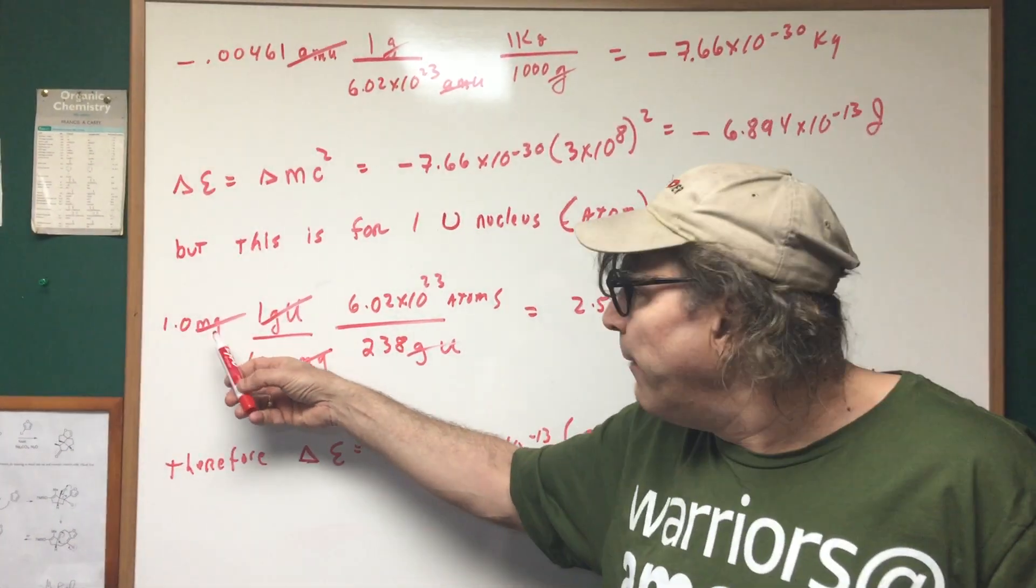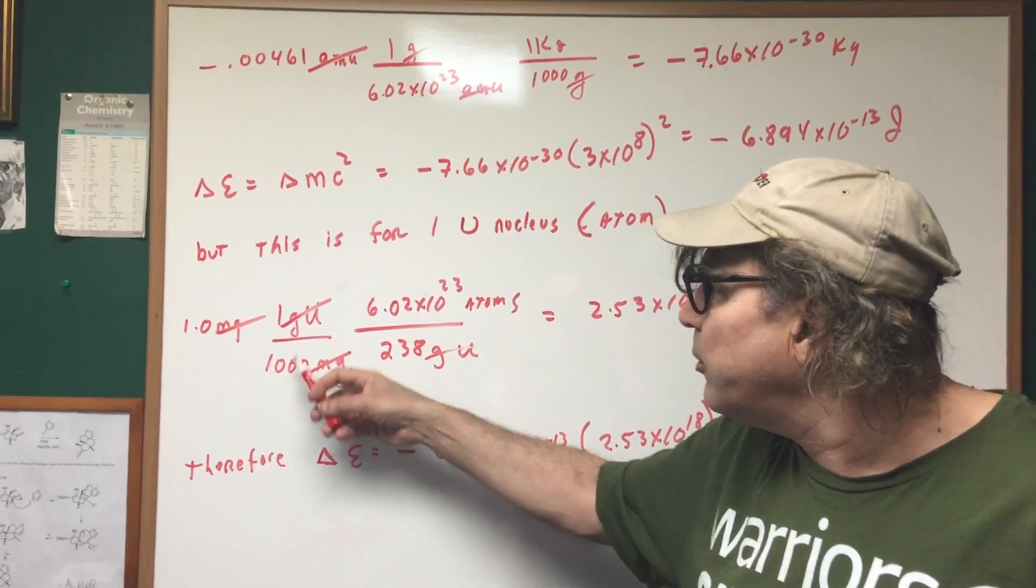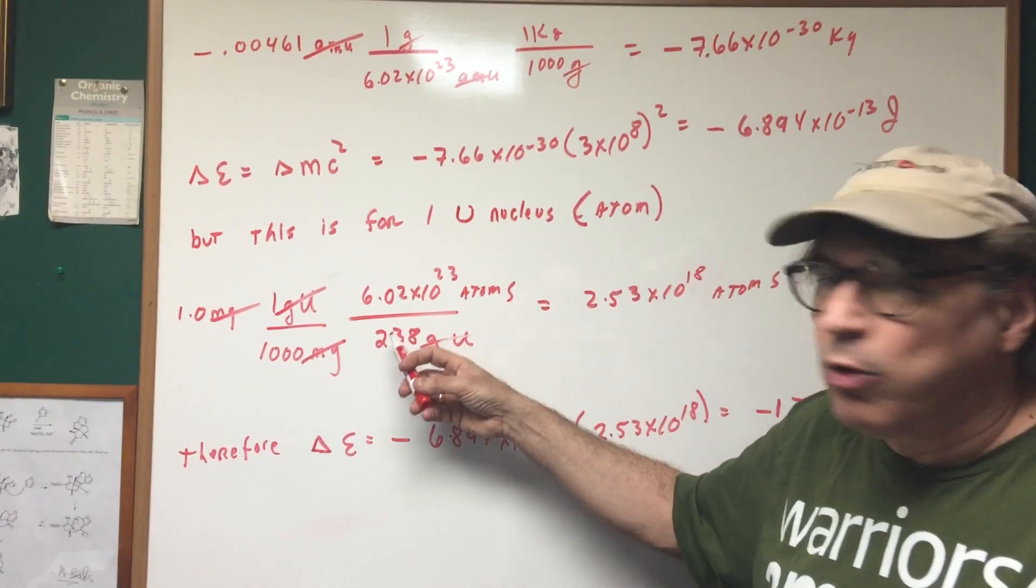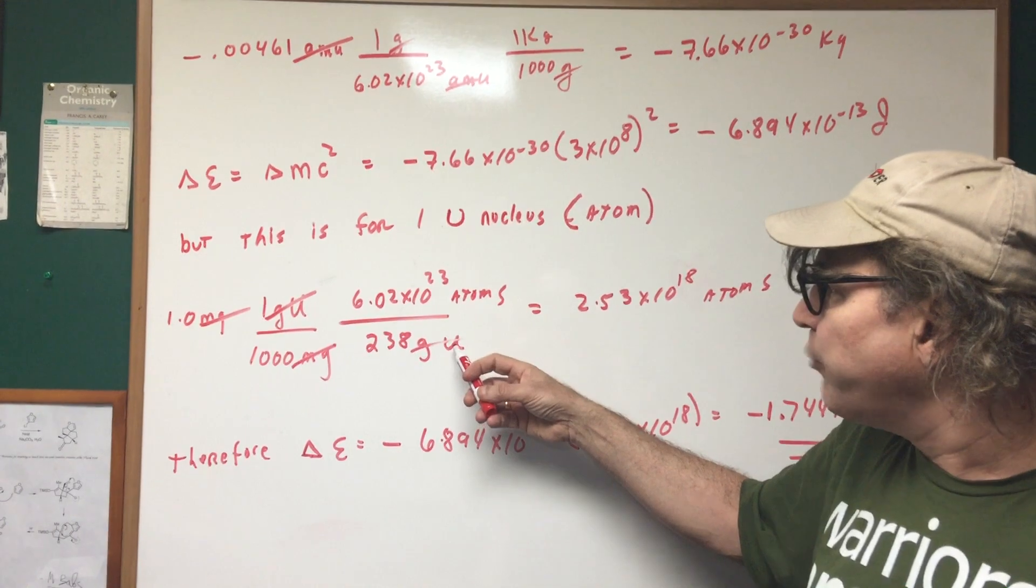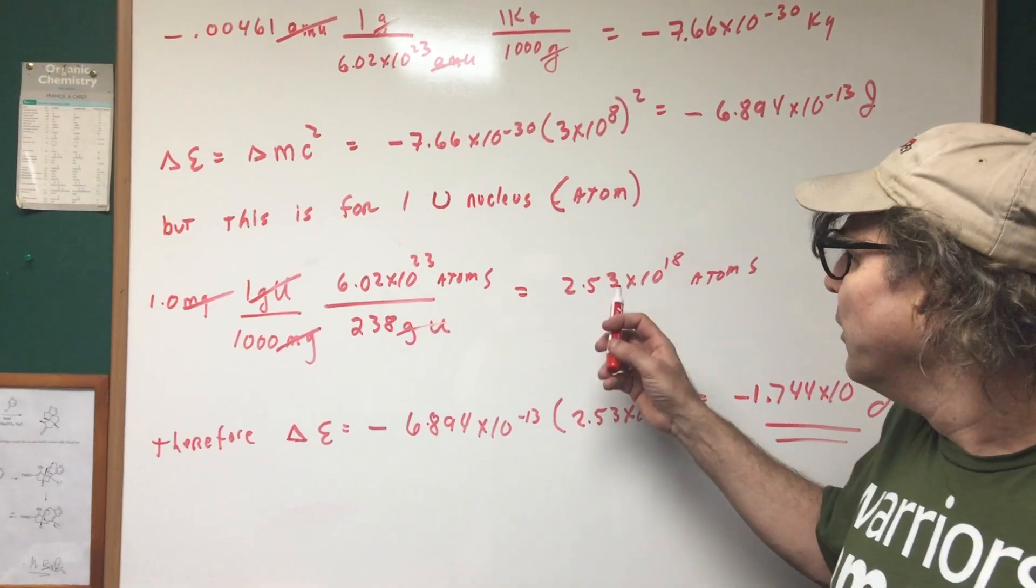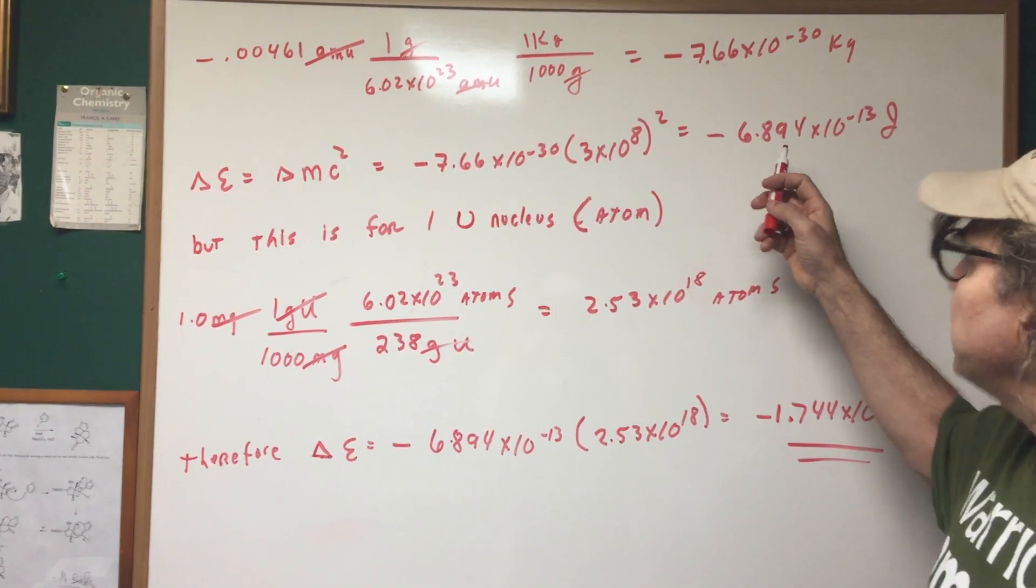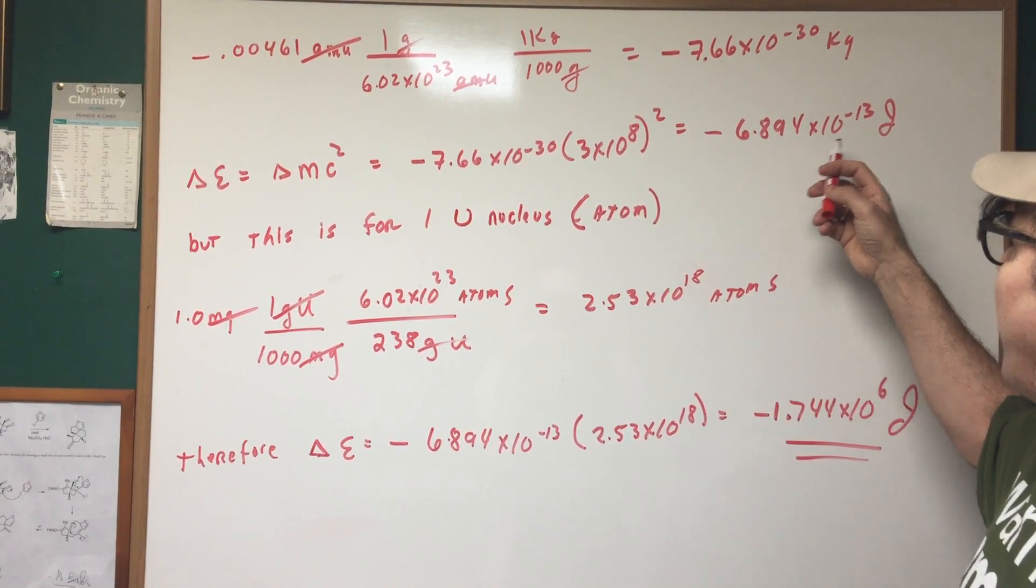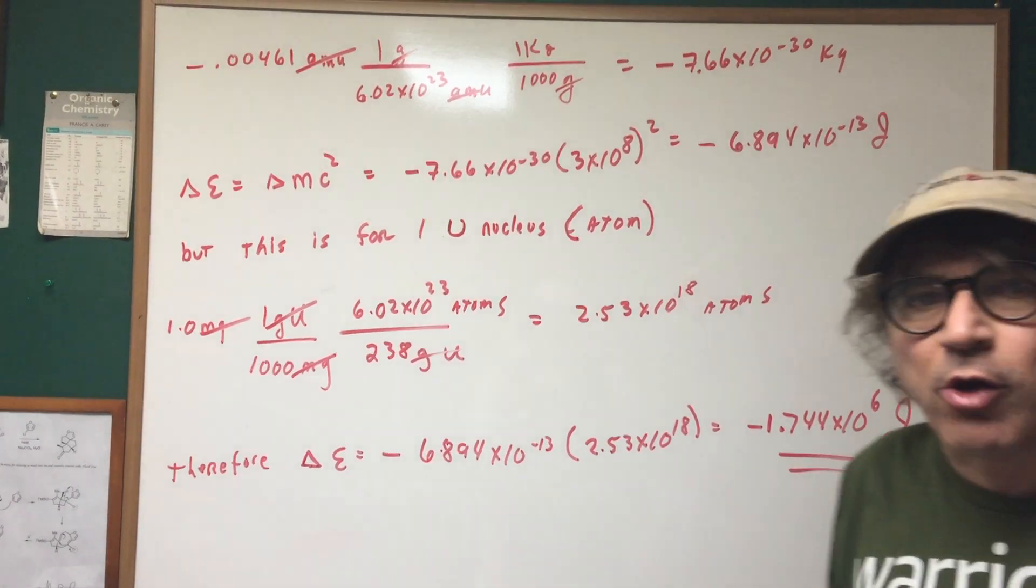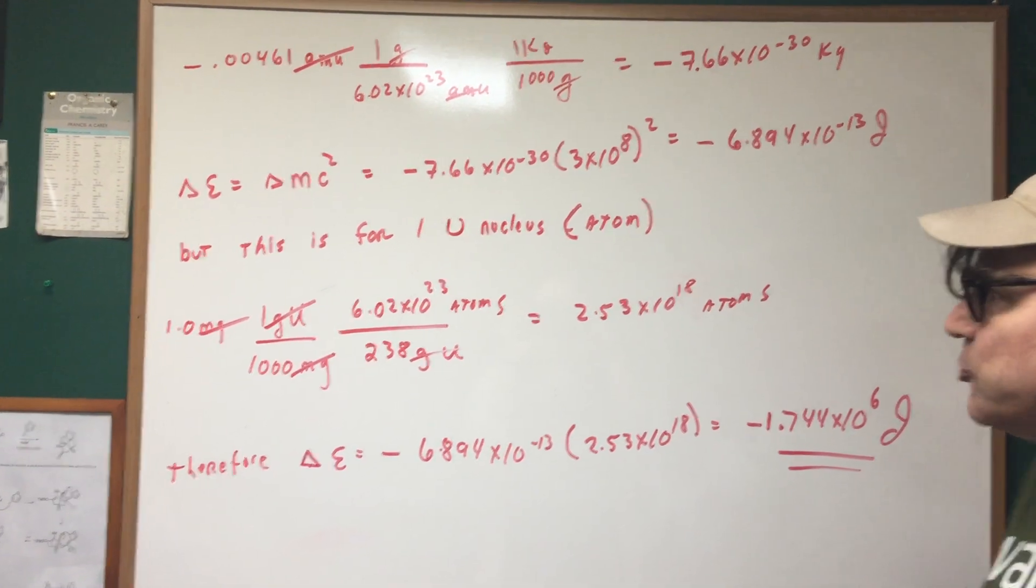We had one milligram. So if you convert one milligram, notice that there's a thousand milligrams to one gram of uranium and there's six to the 23rd atoms in a mole or 238 grams of uranium. That gives me the total number of atoms. And boy, that's a lot of atoms. 2.53 to the 18th atoms. If each atom is minus 6.894 to the minus 13th in energy and you multiply them together, that gives you the total amount of energy, which is minus 1.744 to the 6 joules.